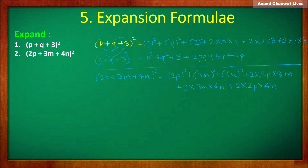Now solve the brackets. Square of 2P is 4P², square of 3M is 9M², square of 4N is 16N². Then 2 into 2P into 3M gives 12PM, 2 into 3M into 4N gives 24MN, and 2 into 2P into 4N gives 16PN. That is the expansion of the second example.